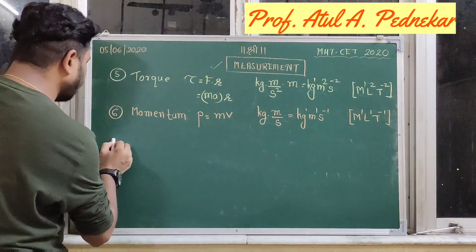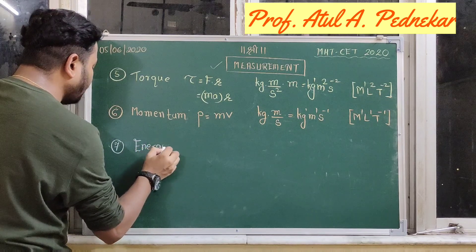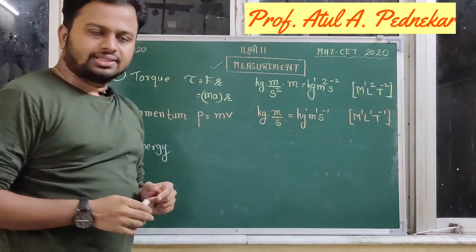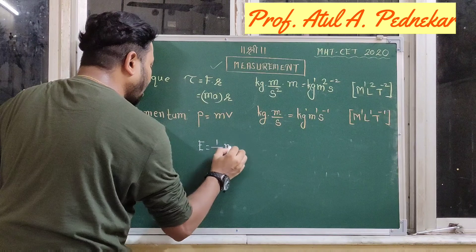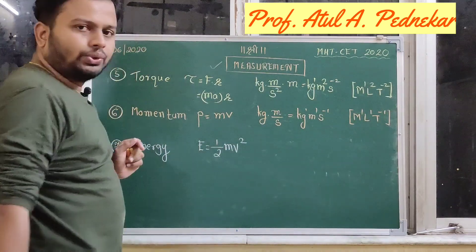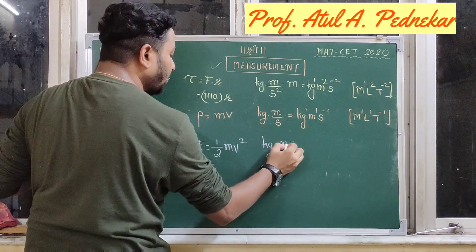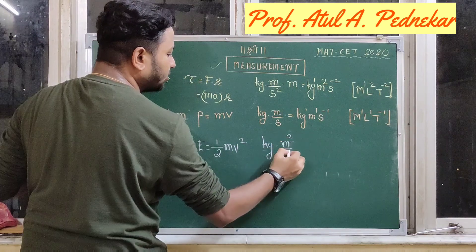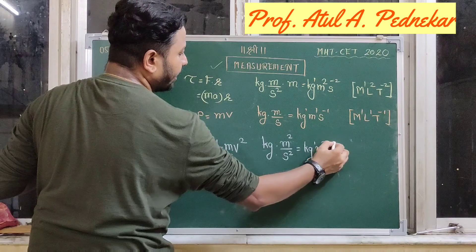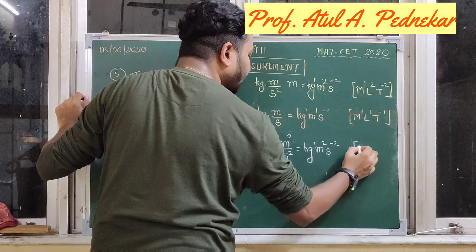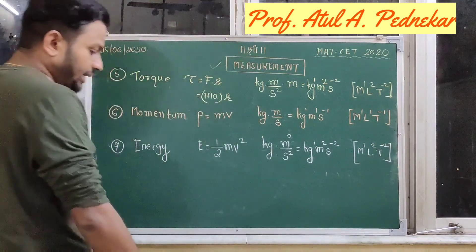The next very important physical quantity is energy. Whenever they ask you the dimension of energy, think about kinetic energy. The formula for kinetic energy is half m into v square. Half is a number with no unit. The unit for mass is kg, and velocity squared gives meter square per second square. Simplifying: kg1, meter square, second square inverse. The dimensions are M1, L2, and T to the power of minus 2.